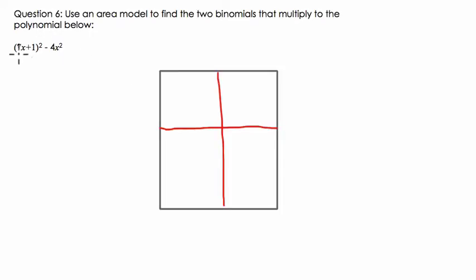the whole term 7x plus 1 is being squared. So we can actually say that this area, I don't know what 7x plus 1 squared is. We could figure it out. But if this region represents that, doesn't it make sense that both sides have to be 7x plus 1? Think about this for a moment.